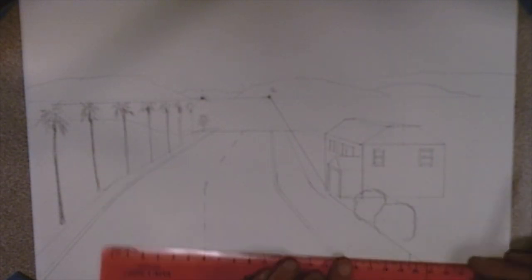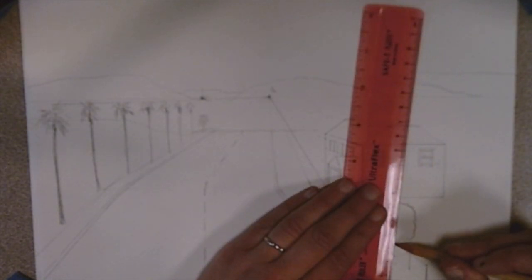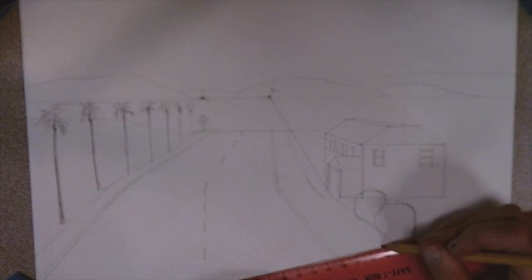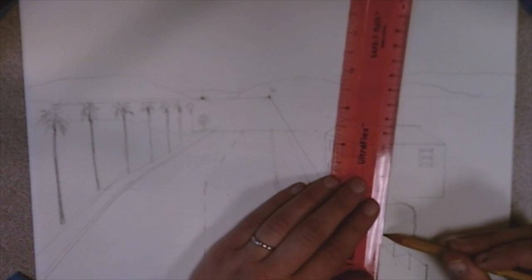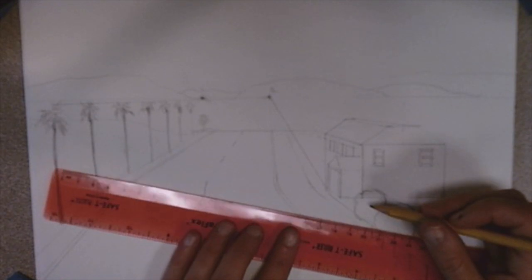Okay, so here I'm drawing a fence. And the line that I'm using is, or the point that I'm using is that point number one, the first point that we drew.